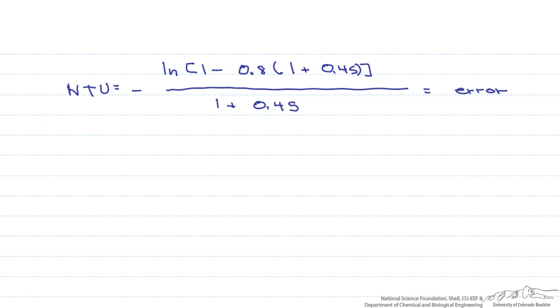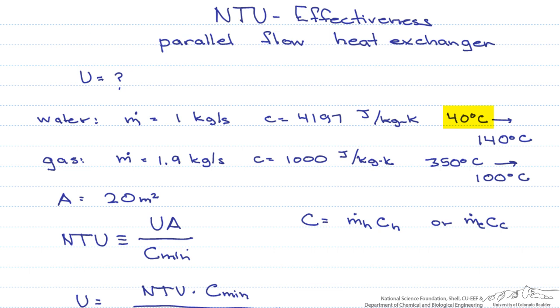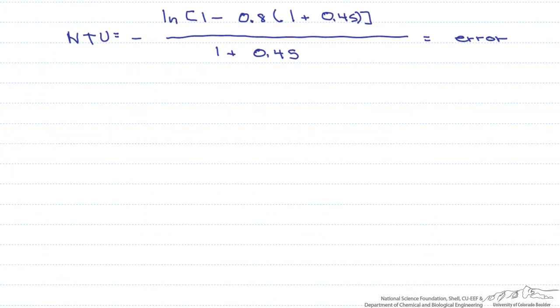So physically, using a parallel flow concentric heat exchanger, you cannot take water that comes in at 40 degrees C and have the gas cool down from 350 degrees to 100 degrees C. So instead, let's change some of the numbers. Let's say that the gas, instead of exiting at 100 degrees C, we are going to have it exit at 150 degrees C.